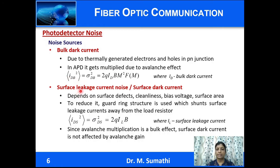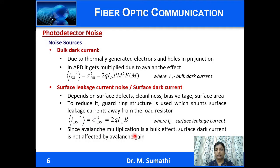The surface leakage current or surface dark current mainly depends on surface defects, cleanliness, bias voltage, and surface area. To reduce this noise, a guard ring structure is used which shunts the surface current away from the load resistor. The expression for surface dark current is given. Since avalanche multiplication is a bulk effect, the surface dark current is not affected by avalanche gain.